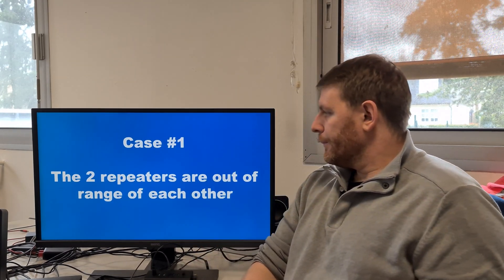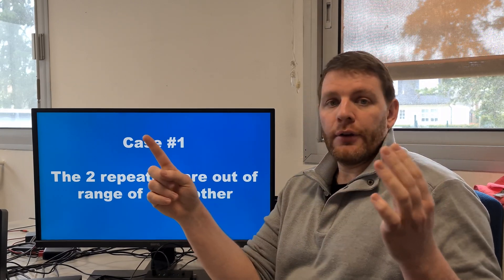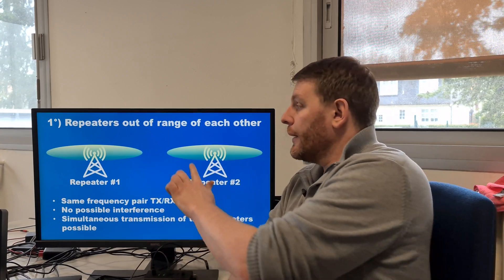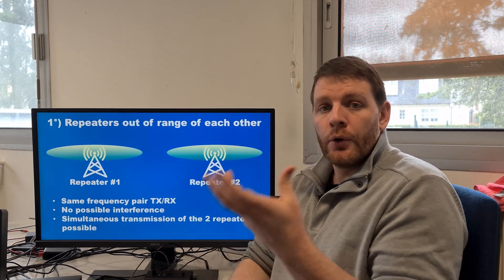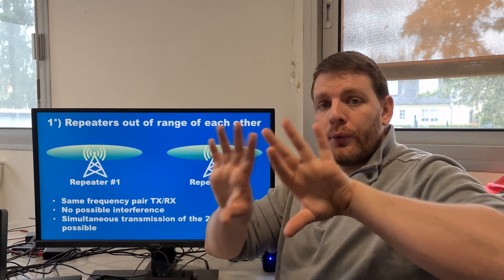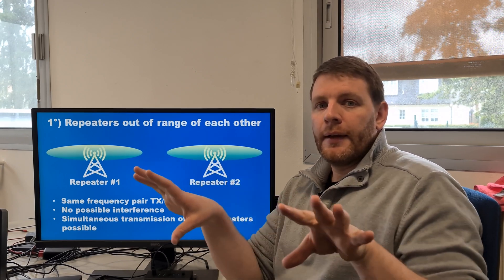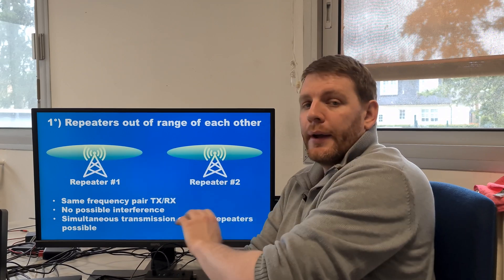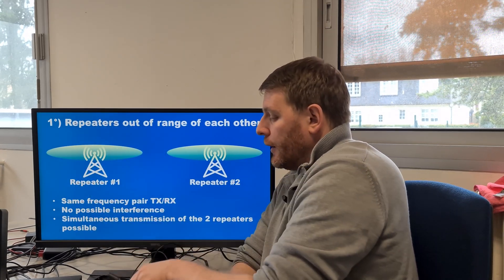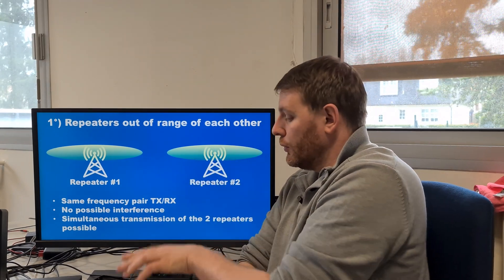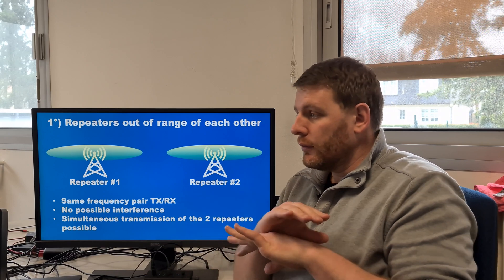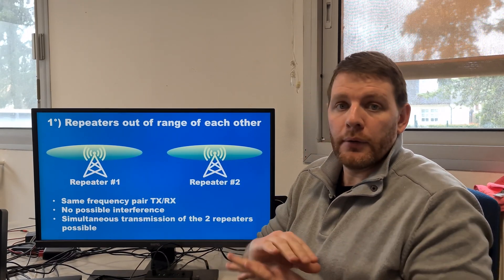Use case number one: you are using two repeaters out of range of each other. It's possible, but you will have a blank area zone where you won't be able to communicate properly. You have repeater one and repeater two, and both repeaters cannot interfere with each other. They each have their own coverage area — area one and area two. You can communicate when in the coverage area of repeater one or repeater two, but not in the gap between them. In this case, you can use the same frequency pair (Tx/Rx) with no problem — no possible interference because they are out of range.